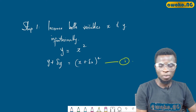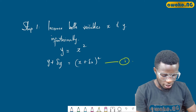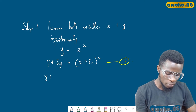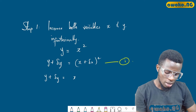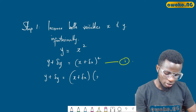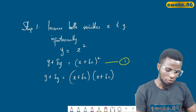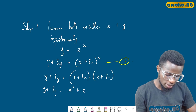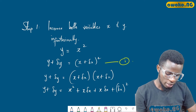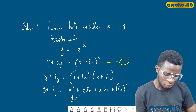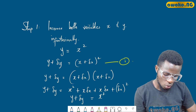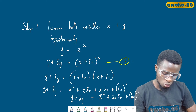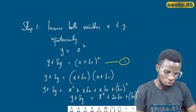Before we go to the next step, let us open this bracket. We have y + δy = (x + δx)(x + δx), which expands to y + δy = x² + x·δx + x·δx + (δx)². This simplifies to y + δy = x² + 2x·δx + (δx)². Let's call this equation two.